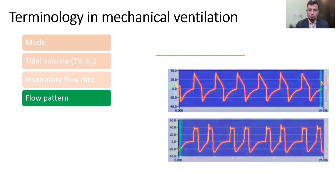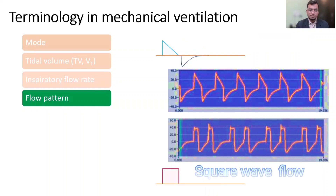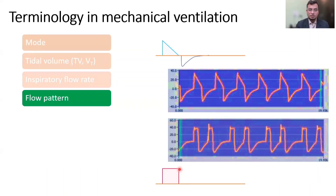There are two common flow patterns. In the decelerating type, the flow goes to the maximum value and then linearly decreases — that is the decelerating flow pattern. The constant flow pattern is a square wave pattern where the flow goes to the maximum value, is maintained at a constant rate for some time, and then starts decreasing. It is described that the decelerating type of flow pattern is better because it is associated with lower peak pressures.